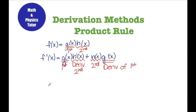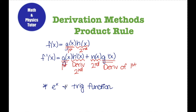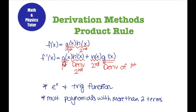The product rule is going to be most helpful in functions that have e to the x and/or some kind of trig function, but it's also helpful when you're multiplying two polynomials that each have a lot of terms in them. We're going to start with some examples multiplying polynomials because those are a little bit easier, and then we'll look at two quick examples with an e to the x and one that has a trig function.